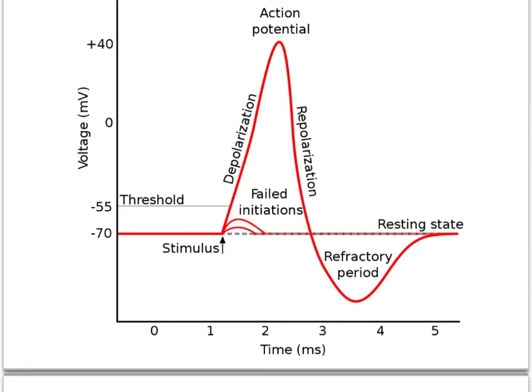When we want to get really scientific, we look at that on some pretty detailed graphs and we can see that normally the resting state is along here and there's nothing happening. If we get a nerve impulse, it's going to fail to initiate until it reaches a particular threshold.